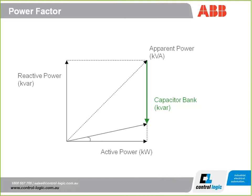Without any power factor correction, your KVA demand from the supply authority is high. However, if you install a PFC — a power factor correction unit, a capacitor bank — on your site, you can produce local reactive power instead of pulling it from the network, therefore reducing your KVA demand. All supply authorities are now charging on a KVA-based demand tariff, so there are obviously many reasons to look at improving your power factor.